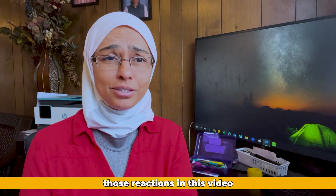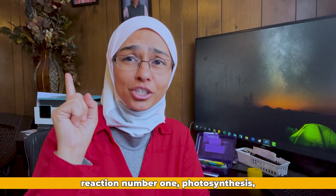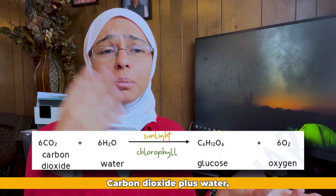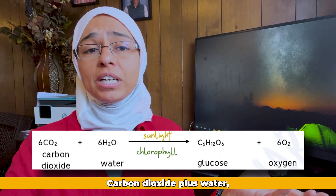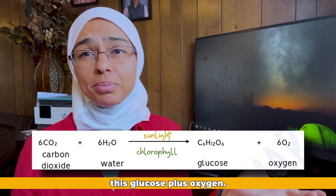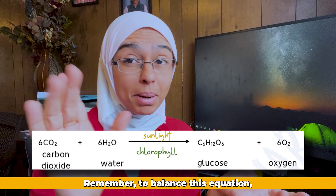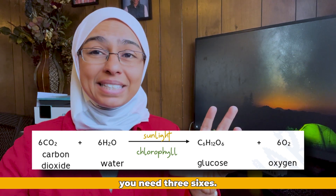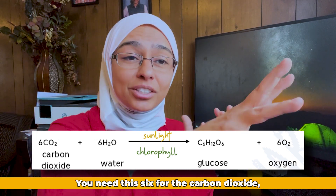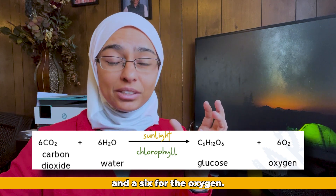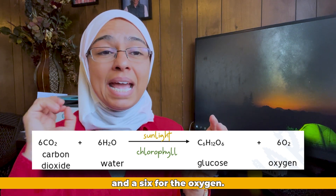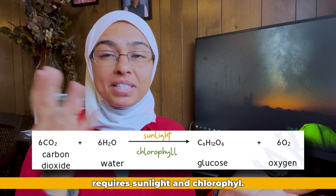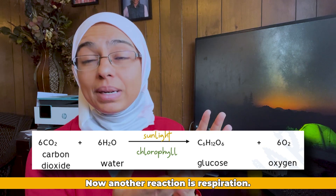Reaction number one: photosynthesis. Carbon dioxide plus water gives glucose plus oxygen. To balance this equation you need three sixes — a six for the carbon dioxide, a six for the water, and a six for the oxygen. This reaction requires sunlight and chlorophyll.